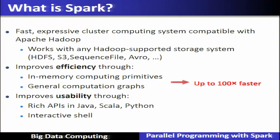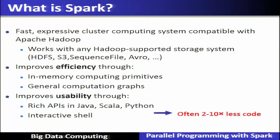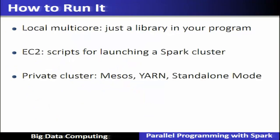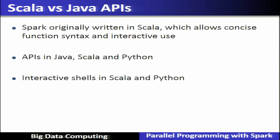Using in-memory computation, Spark is 100 times faster compared to the previous generation MapReduce systems. With the interactive shell, it has reduced code by 2 to 10 times. It can run on a local multi-core system or using a private cluster with Mesos, YARN, and standalone mode. Spark was originally written in Scala, and APIs are available for Java, Scala, and Python. Interactive shells are available in Scala and Python.